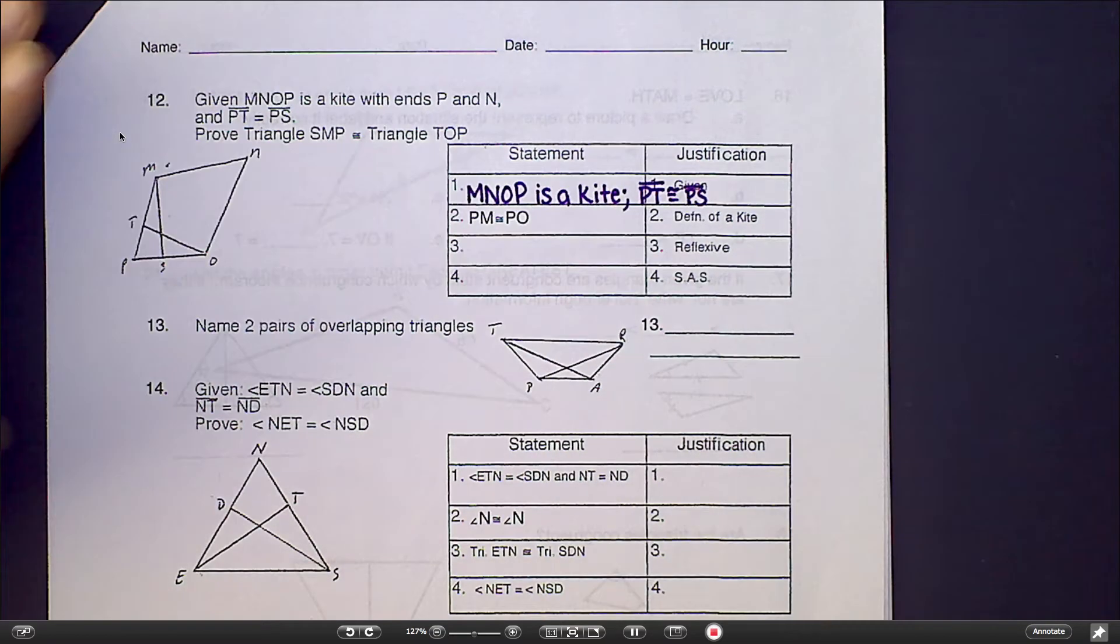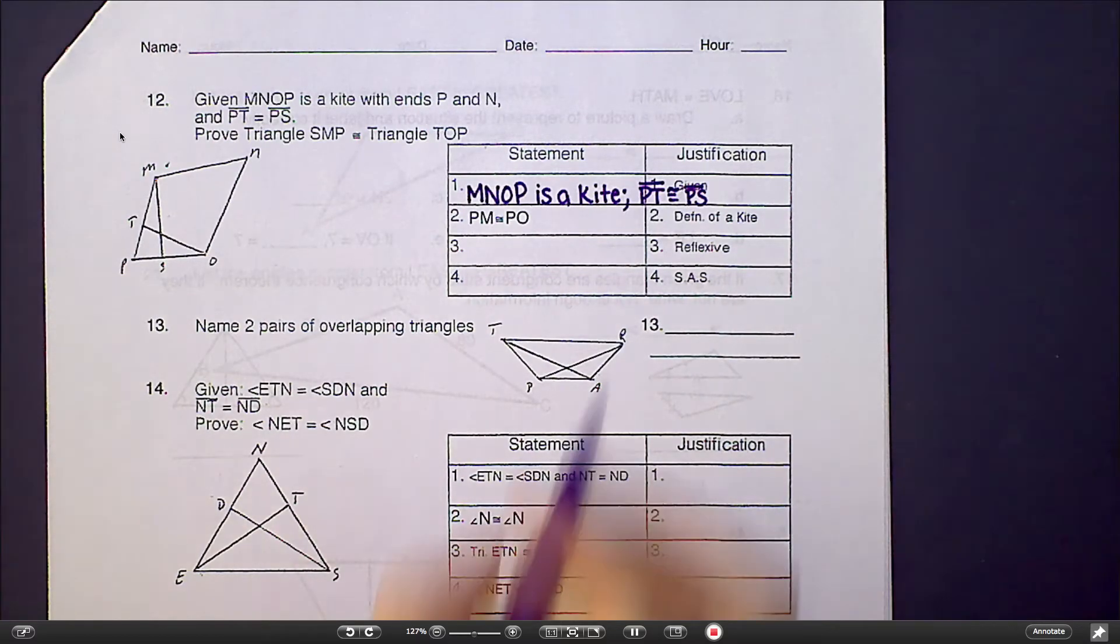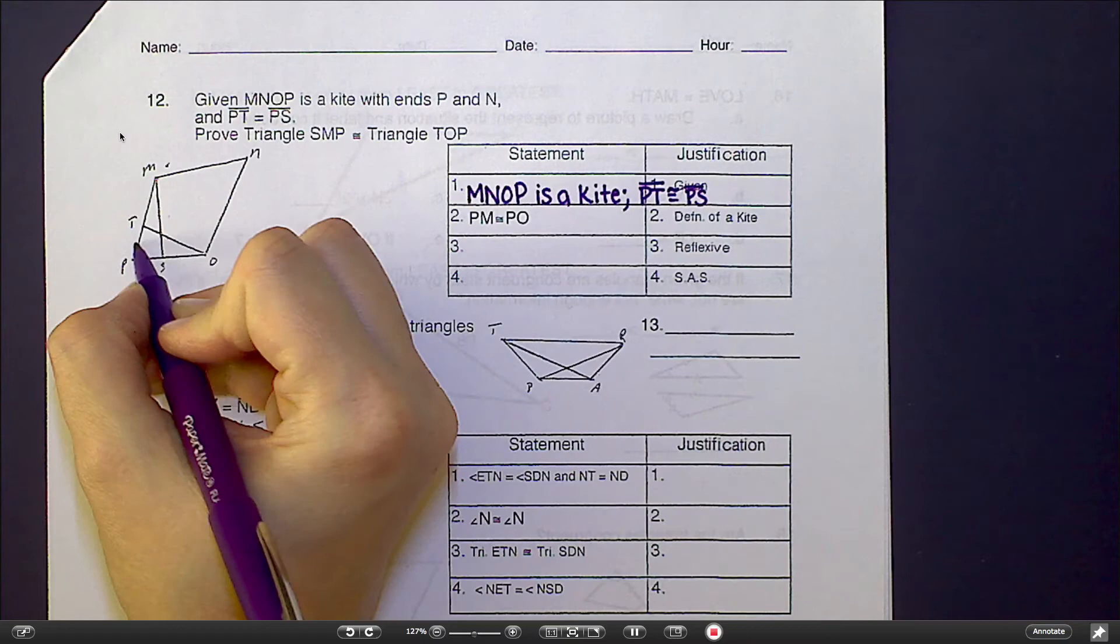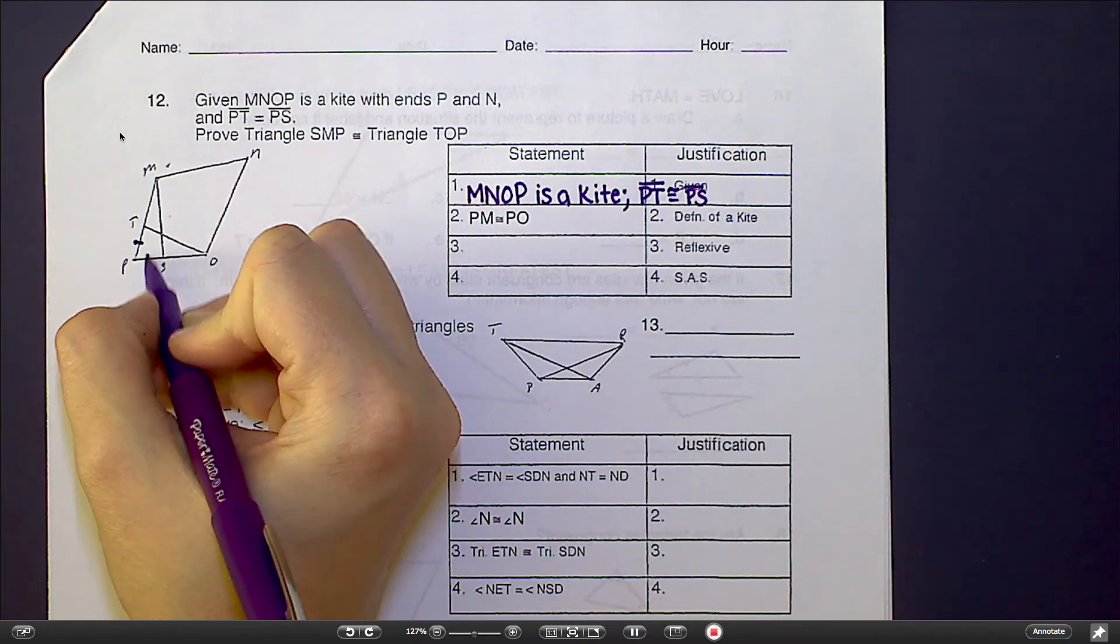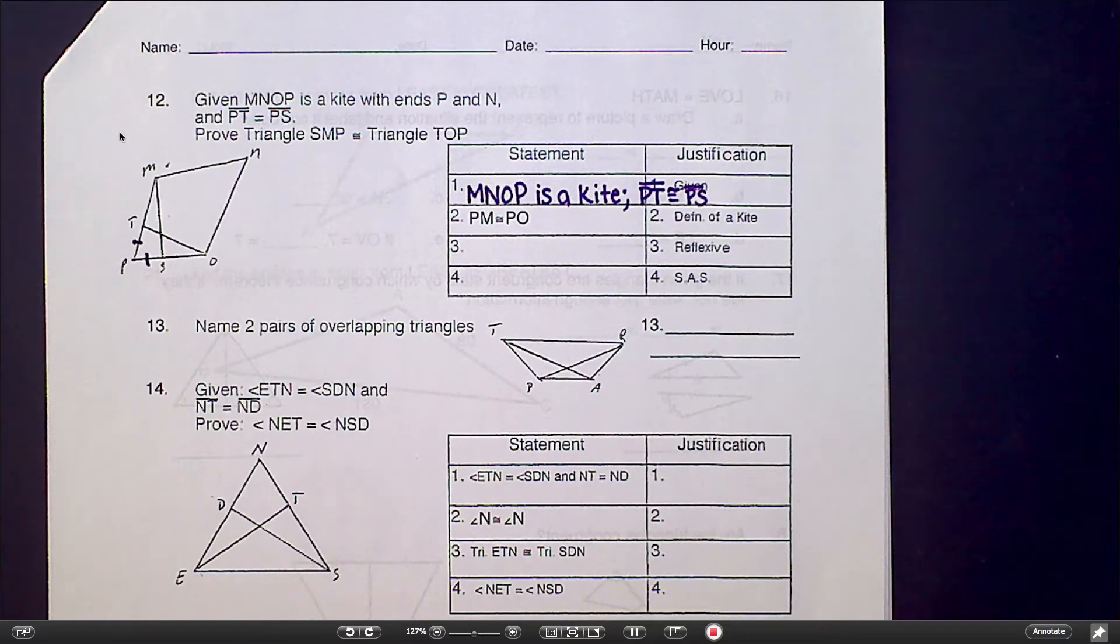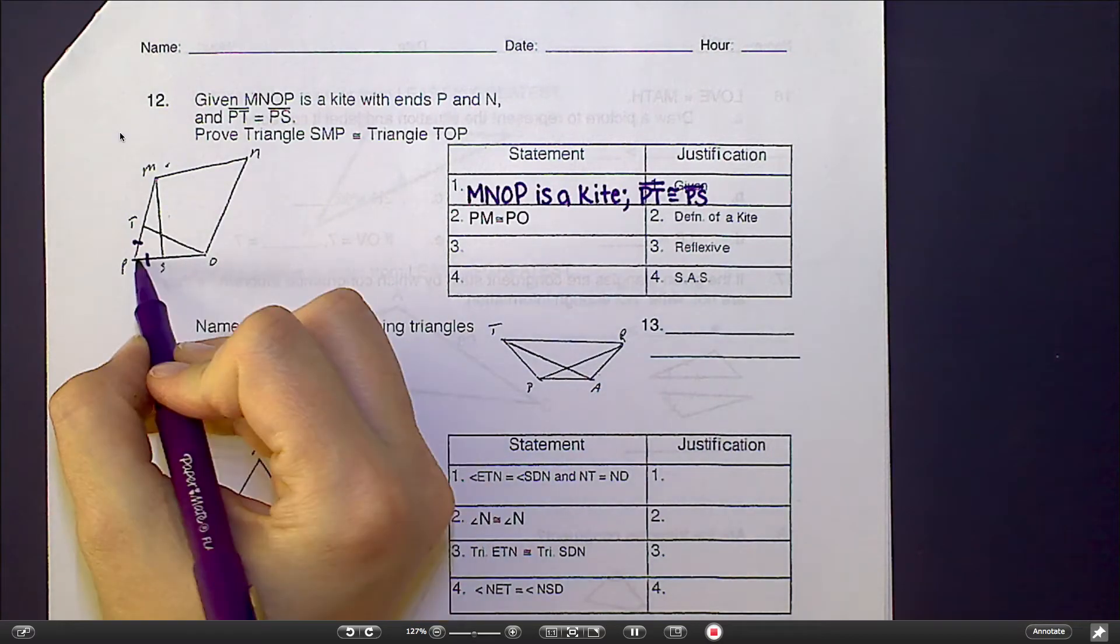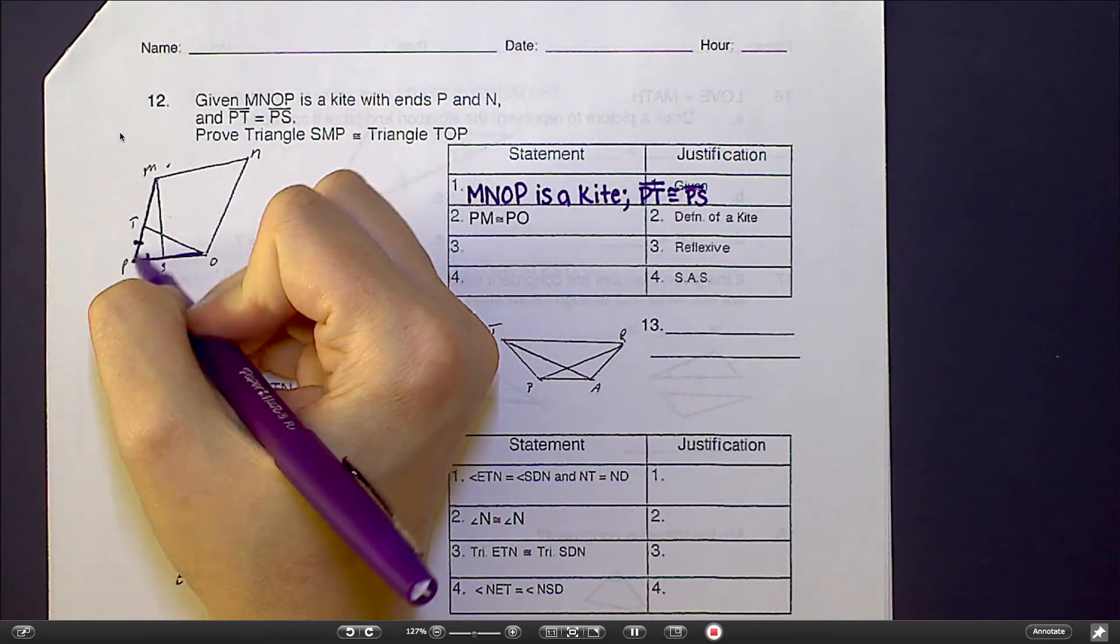Usually you would be able to fit that all in one line. So let's go ahead and mark that, that PT, which is this little piece here, is congruent to PS. Now, you don't know much about kites, and that's okay, because we haven't talked about kites yet. That's why I gave you the next line. It says PM is congruent to PO. That's one of the properties of being a kite, is that these two sides, PO and PM, would be congruent.